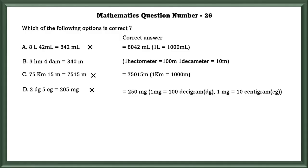In option C, 1 km is equal to 1000 m. The correct answer is 75,015 m, but they have given 7,550 m, so it is wrong. In option D, 1 mg is equal to 100 decigrams and 1 mg is equal to 10 centigrams. The correct answer is 250 mg, but they have given 205 mg.